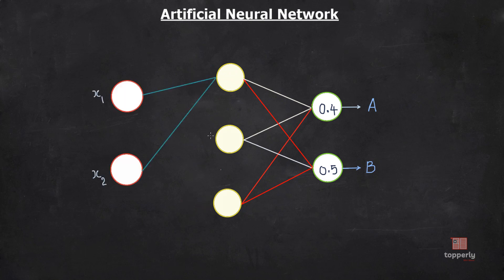To change the activation of a hidden neuron we need to tweak the values of its incoming synaptic weights, which is in turn dependent upon the activations of the neurons in the previous layer. In effect, we are propagating backwards through the network — it is in this context that the term backpropagation comes into relevance.